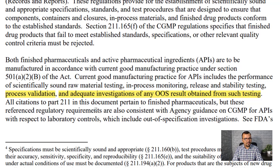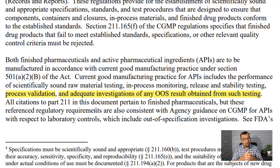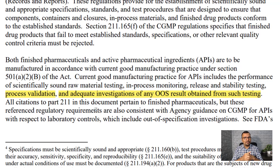Now, there could be two situations. As per optimized parameters, the OOS process is a must. But in case the out-of-spec result is for variable parameters, whether we still need to use the OOS process or can use the lab incident or deviation process — that clarity is not given in the US FDA's guideline.